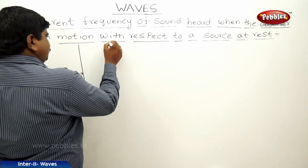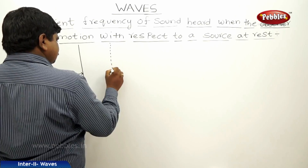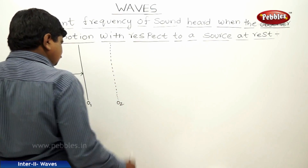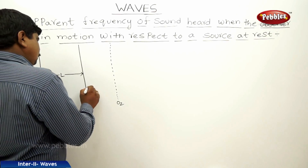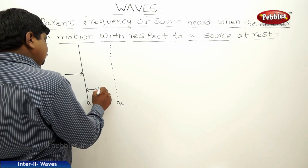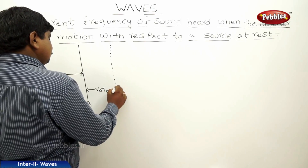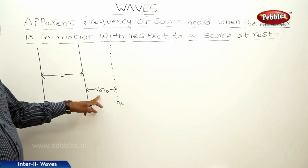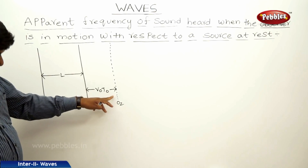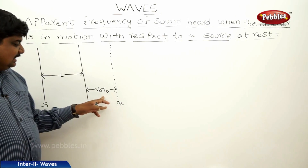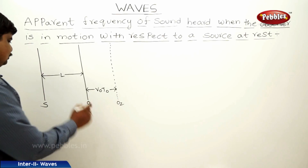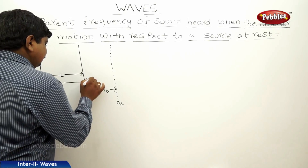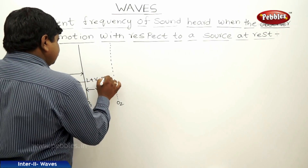The observer has reached another position O2. The distance from O1 to O2 is V0·T0, because the observer is moving with velocity V0 and the time taken from O1 to O2 is T0. So the total distance from the source to O2 is L plus V0·T0.